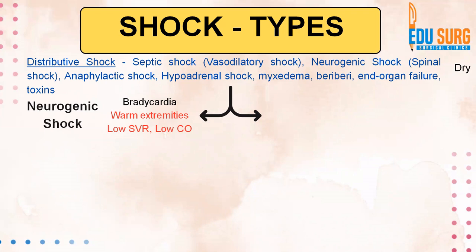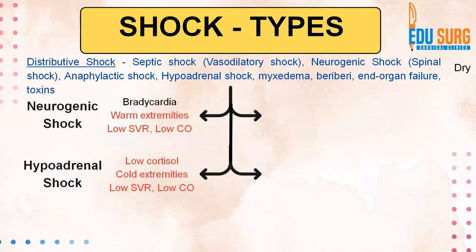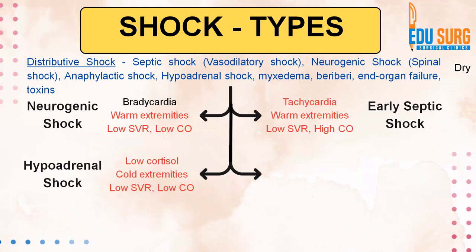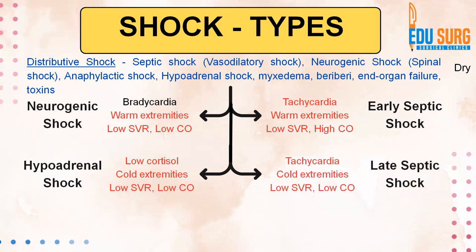Low systemic vascular resistance and low cardiac output. On the other hand, with low SVR and low cardiac output, if the extremities are cold and serum cortisol is low, then we are looking at hypoadrenal shock — which has tachycardia, low SVR, low CO, cold extremities, and low cortisol. Tachycardia with warm extremities and high cardiac output is seen in early septic shock. But when sepsis is florid, you will see tachycardia and cold extremities with low systemic vascular resistance and low cardiac output.